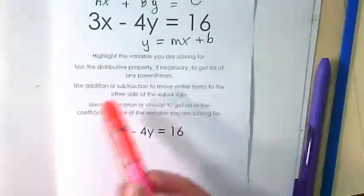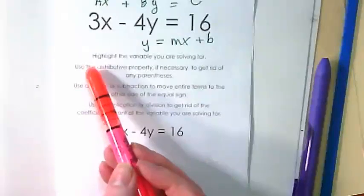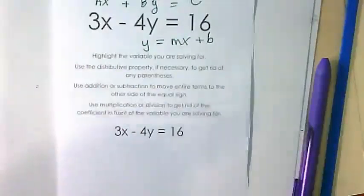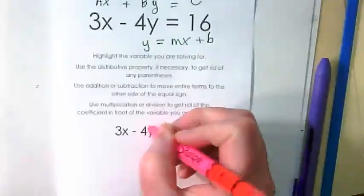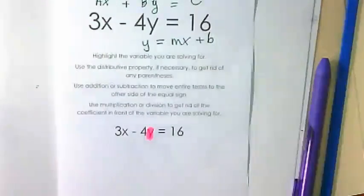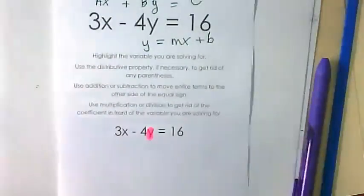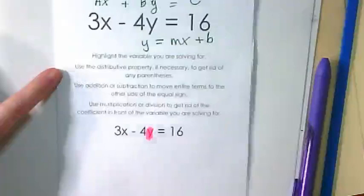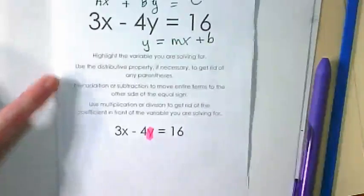So here are some directions. These should help you remember the steps and we'll just go through them together. You're going to start by highlighting the variable that you were solving for. We are solving for Y. So you can circle it, highlight it, underline it. Step two is to use a distributive property, if necessary, to get rid of any parentheses. We don't have any parentheses in this example.